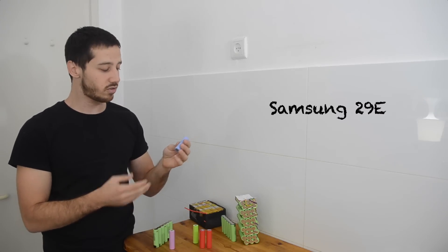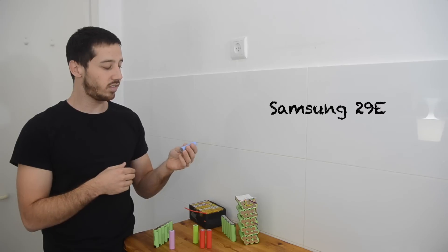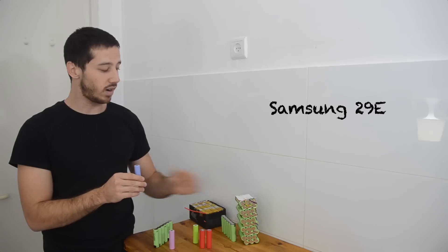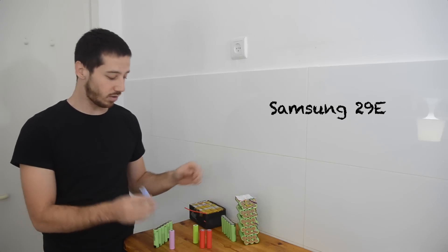Samsung 29E cells. These are another sort of oldie but goodie. These can handle a higher current and have a bit higher capacity. These are also 2.9 amp hours. Kind of like the Panasonic PF cells.